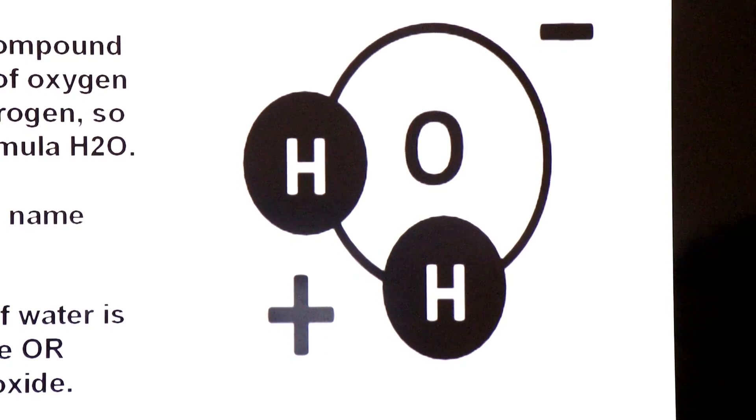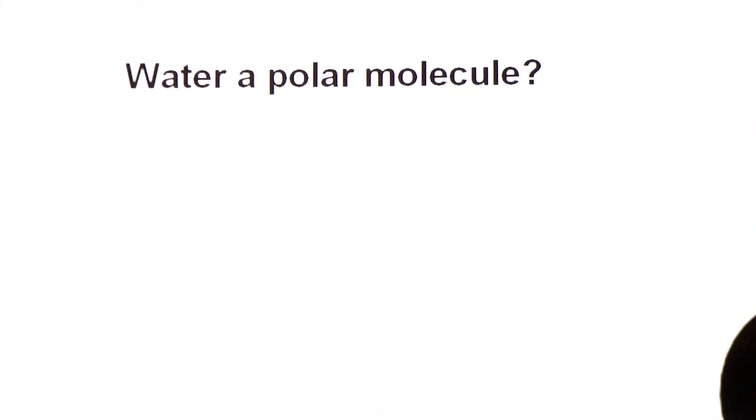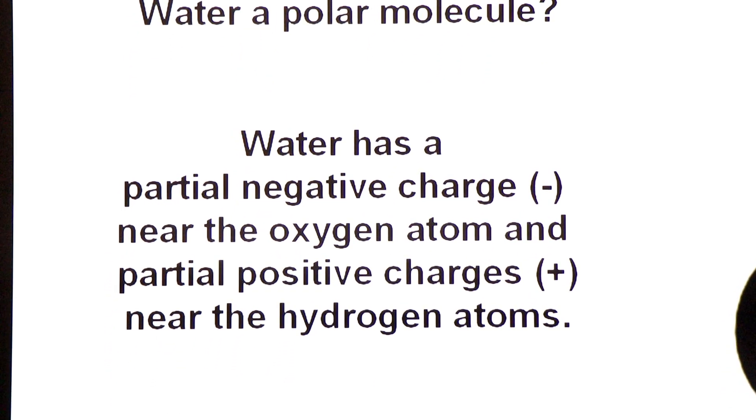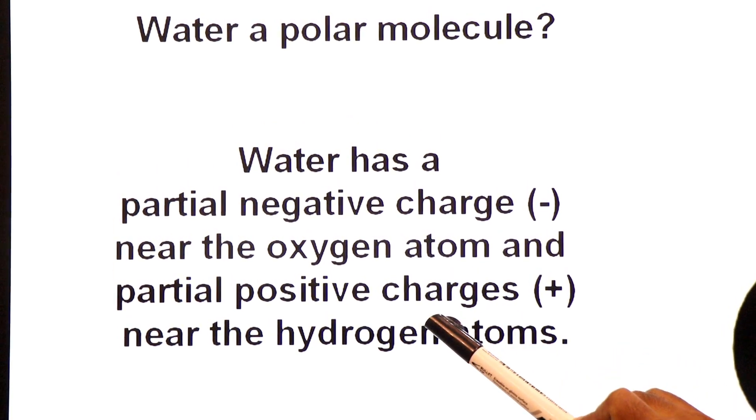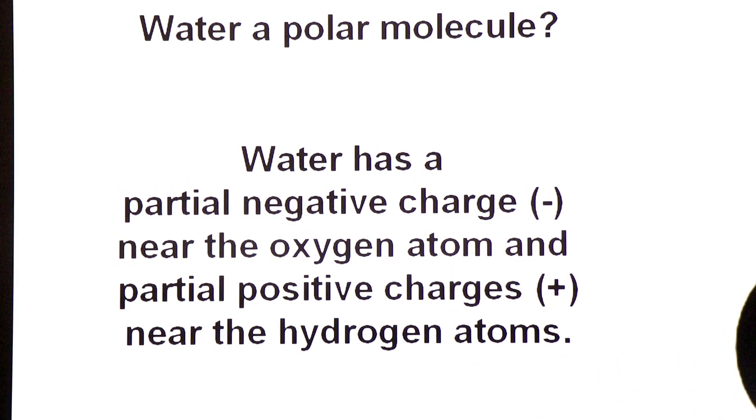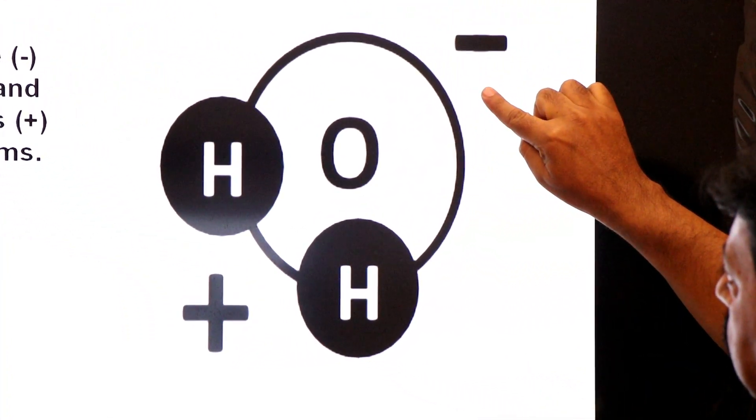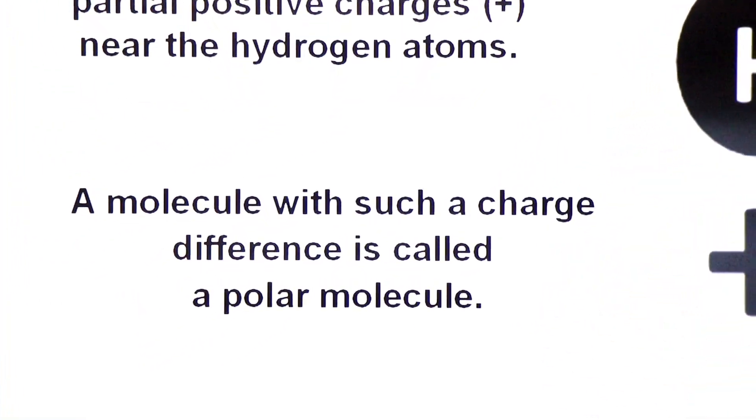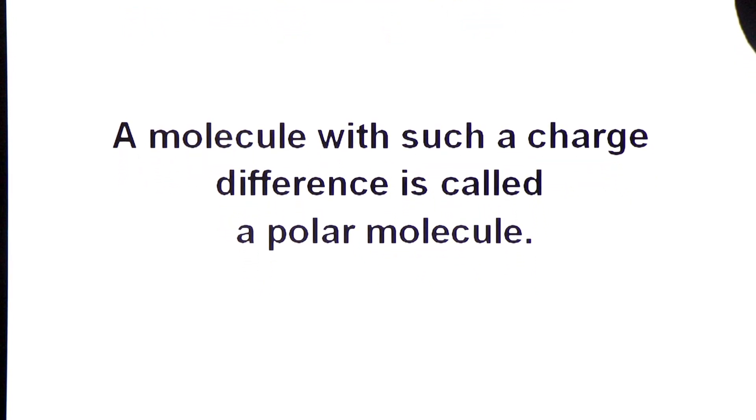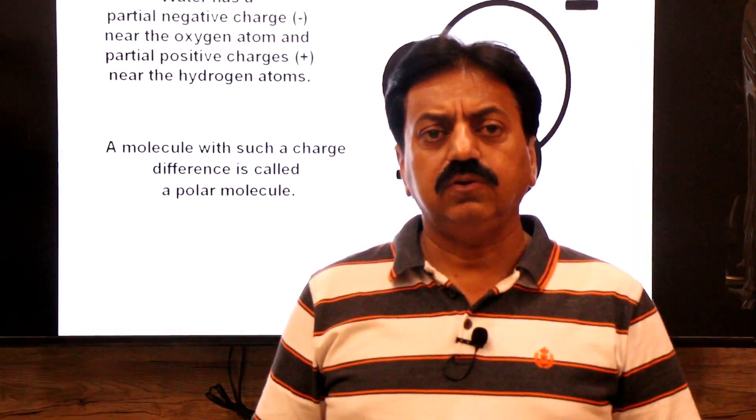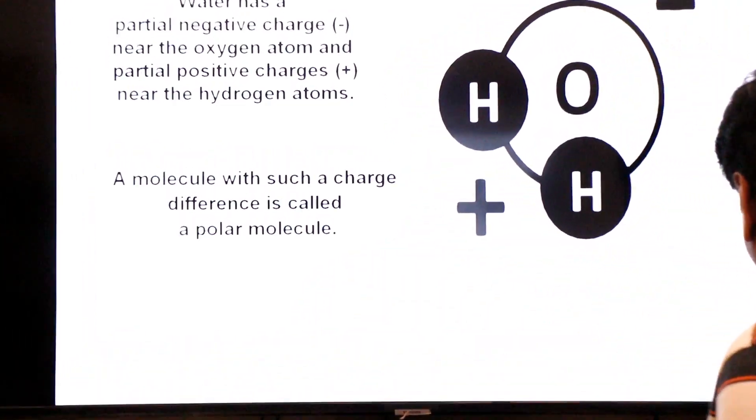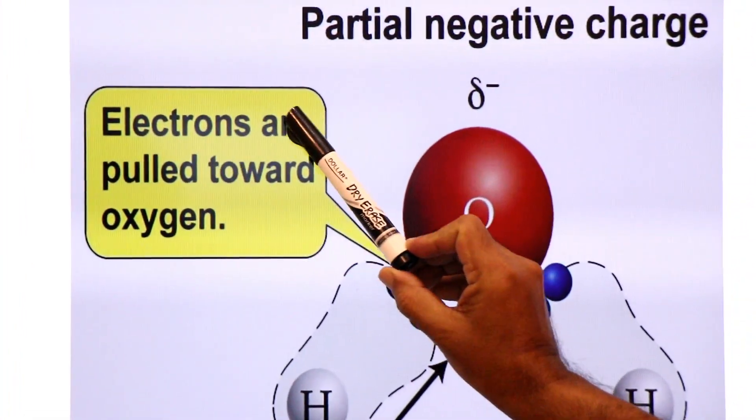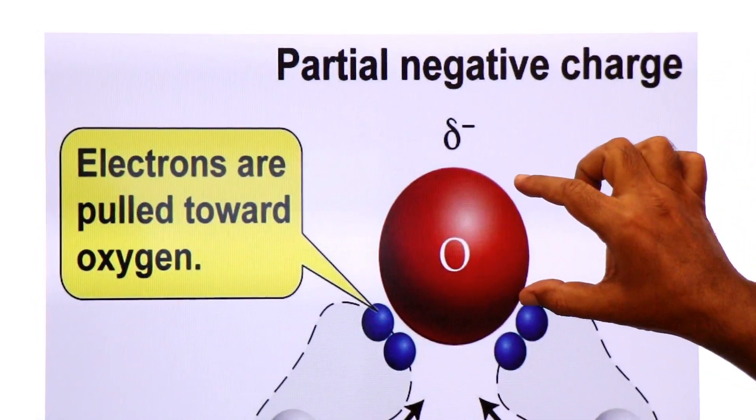Is poor slide ko focus kijiye ga, dear students. Yeh jo water ka molecule hai isko polar molecule kaha jata hai. Water is a polar molecule. Let's discuss why we say it is polar. Water has partial negative charge near oxygen atom and partial positive charge near hydrogen atom.